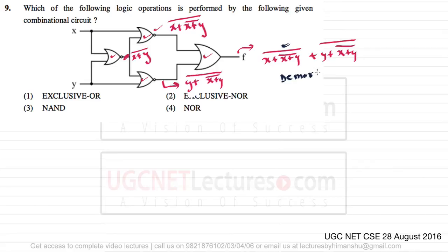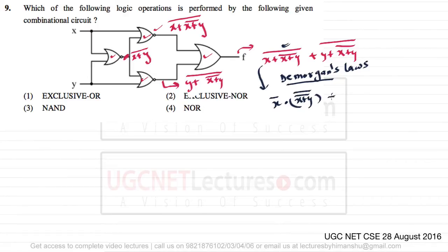We are going to apply De Morgan's laws. So (X + (X + Y)')' can be written as X' · (X + Y)'' and (Y + (X + Y)')' can be written as Y' · (X + Y)''.